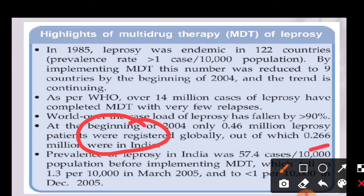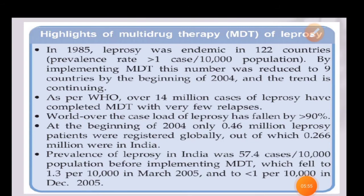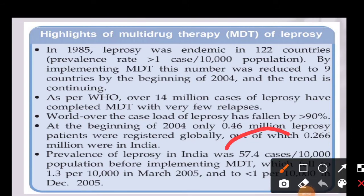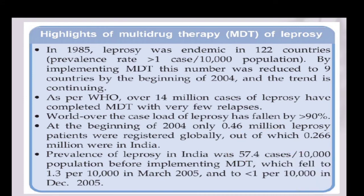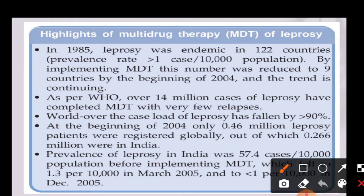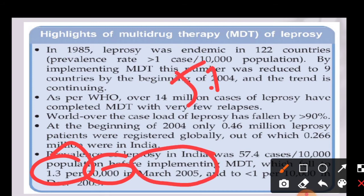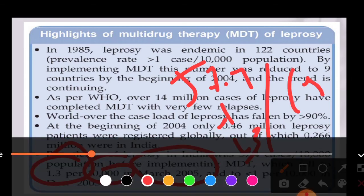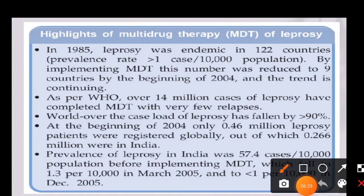Out of the global 0.46 million patients, 0.26 million were from India, according to the 2004 report. Before multi-drug therapy, a survey found 57.4 cases per 10,000 people. After implementing MDT, this number decreased to 1.3 per 10,000 people by 2005, and further decreased to one person per 10,000 by December 2005.